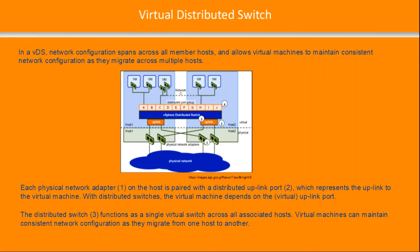In a virtual distributed switch, the network configuration spans across all member hosts. As shown in the graphic, you may have two hosts, however the port groups are distributed across all hosts. All hosts in the data center managed by vCenter see the same virtual machine port groups and VM kernel port groups, as they are spanned across rather than being on individual ESXi hosts. This helps with scalability and ensures a consistent interface as virtual machines migrate from one host to another without losing connection.